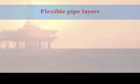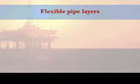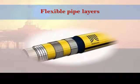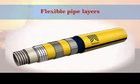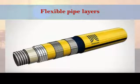Flexible pipe layers. The combination of materials used for a given flexible pipe design depends on the specific application. This means that the number and types of layers are based on specific application and conditions. This figure shows a typical flexible pipe structure which is composed of several layers as follows.